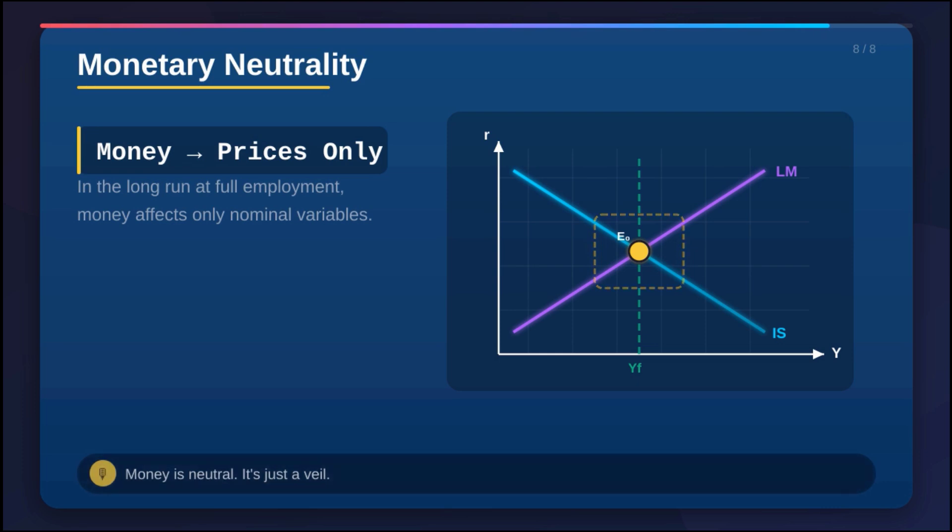Which leaves us with a pretty tough final thought for everyone to chew on. If the model is so clear, if the consensus is that this path leads only to inflation and not to growth, why is there always so much political pressure to rely on the central bank to cover deficits in tough times? Is that illusion of free money just that seductive? Something to think about.